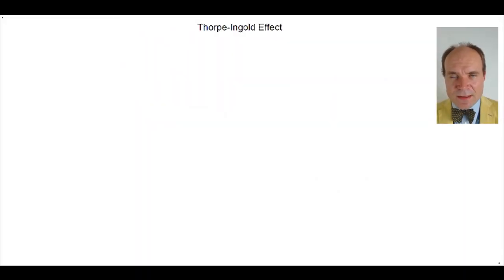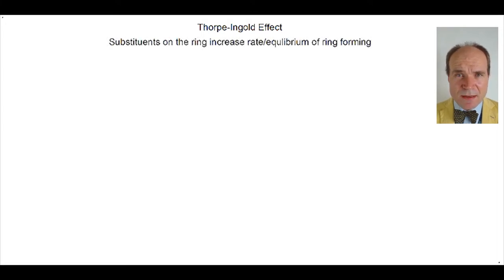With the Thorpe-Ingold effect we observe that the introduction of a new substituent to a ring causes that ring to form at a faster rate and the equilibrium to shift towards the cyclic form and away from the acyclic form. Now the explanation for this varies depending upon the ring size.